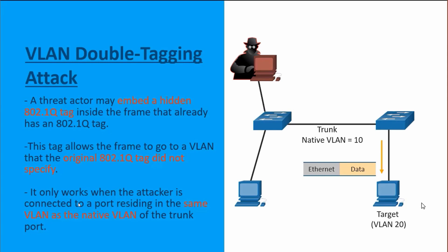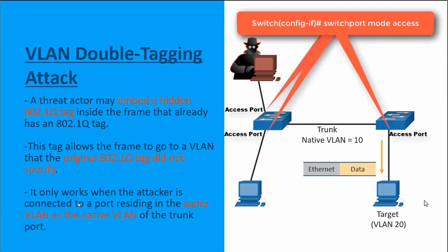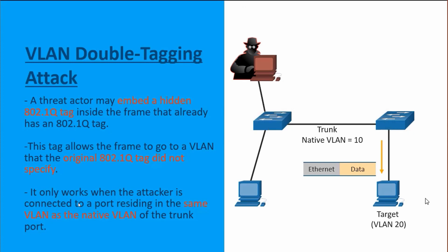VLAN hopping and VLAN double tagging can both be prevented by following a couple of security guidelines. Number one, we should get rid of trunking on any access port that goes to end devices. The whole idea of auto-trunking, using things like dynamic desirable and dynamic auto, should be disabled. We should use manual static trunking as needed. Also, the native VLAN should only be used on trunk links and should never span to a user device. This scenario only works when the threat actor is on the same VLAN as the native VLAN between our switches.